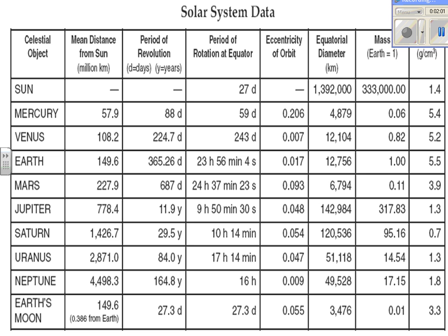This is page 15 of the Earth Science Reference Table — the solar system data chart. You have a lot of information here that will be very useful. There are several columns. The first column lists the celestial objects in the solar system, which includes the Sun, the eight planets, and Earth's moon.